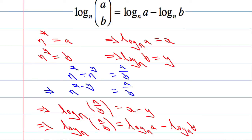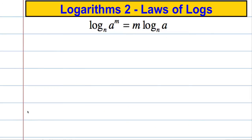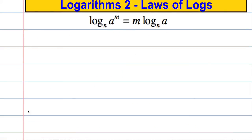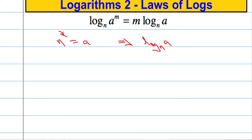We've got one more rule to prove — you might even want to have a go at this yourself. We have log to the base n of A to the power m equals m times log to the base n of A. So if you have a log raised to the power m, we can bring the power down in front. We suppose that n is raised to some power x giving an answer of A. Rewriting in log form: log to the base n of A equals x.